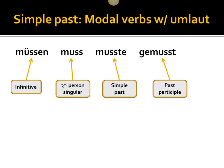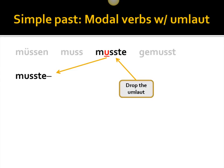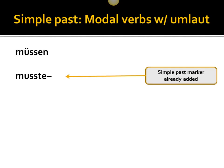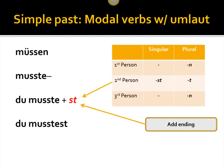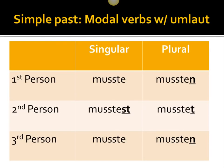Now, with the modal verbs — we have müssen, to be required or obligated to do something. Again, we have the four principal parts: müssen, muss, musste, gemusst. We want to focus on the simple past form. You'll notice that when we make the simple past construction, if the verb has an umlaut — like müssen, or dürfen, or können — we're going to have to drop the umlaut. So we get the simple past form musste, which already has the simple past marker added. We then tack on the conjugation endings and get: ich musste, du musstest, er/sie/es musste, wir mussten, ihr musstet, sie mussten.